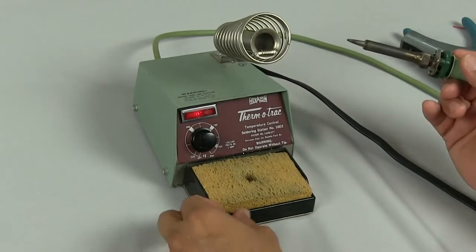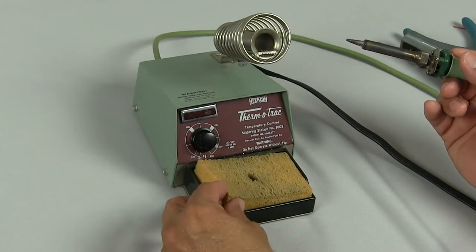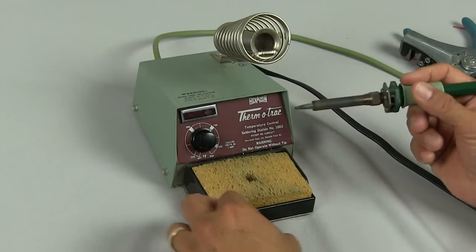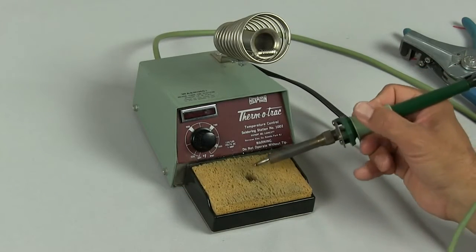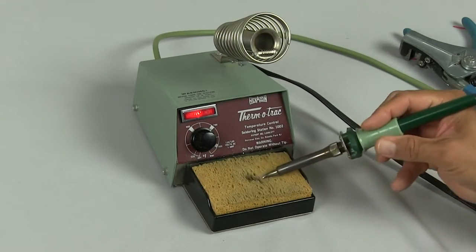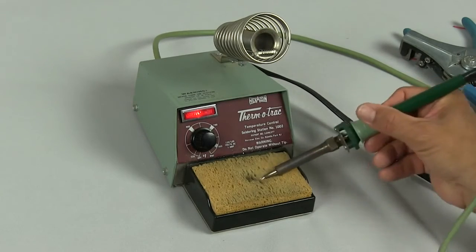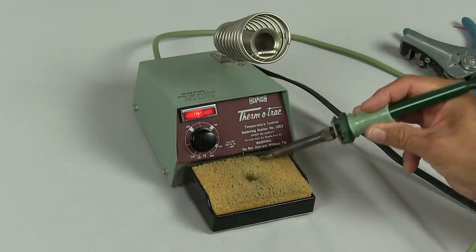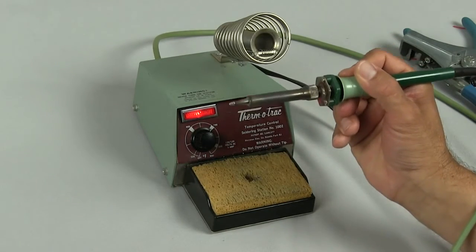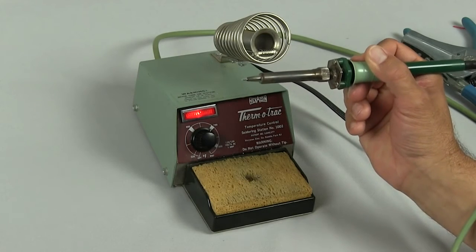Second thing, we want to have a damp sponge, not soaking wet, but damp so that we will have a good surface, a good damp sponge to clean our tip with. Wipe the tip so that you get a good smooth surface on your tip when you are ready to solder.